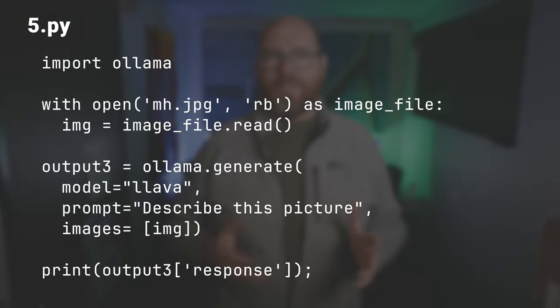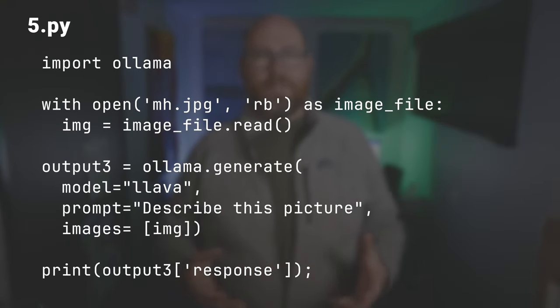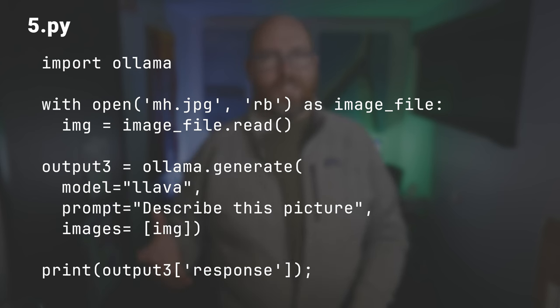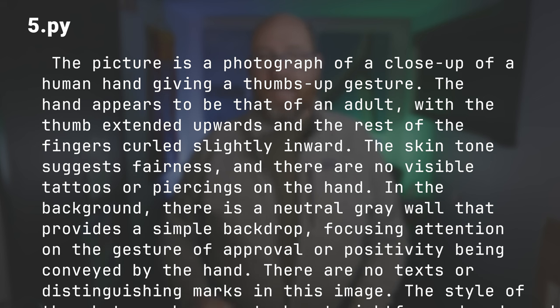Now let's try describing an image in 5.py. I have a JPEG of my hand in this folder. Unlike the REST API which expects a base64 encoded string, the Python module expects the image as a bytes object — in fact, it won't work with a base64 encoded string. Then just have the model describe the image, and that worked just fine.